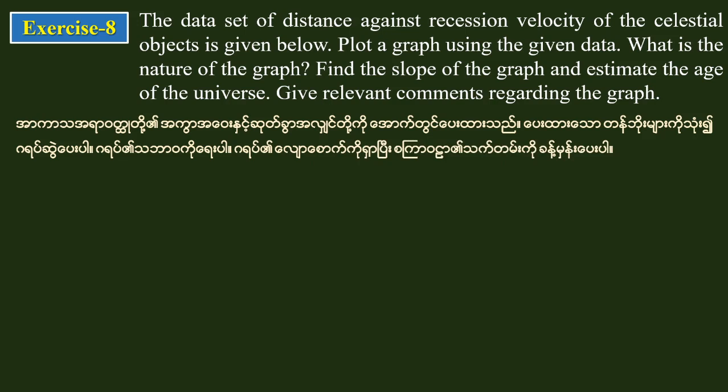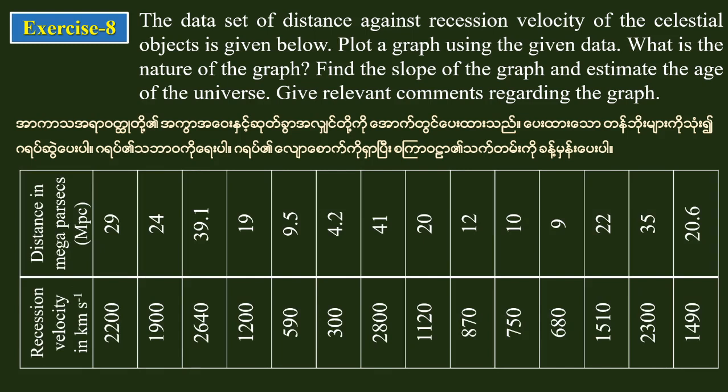The data set includes distance in megaparsecs on one axis, and recession velocity in kilometers per second on the other axis. The data set covers a range for us to plot and analyze.